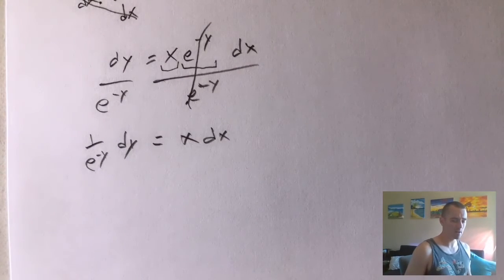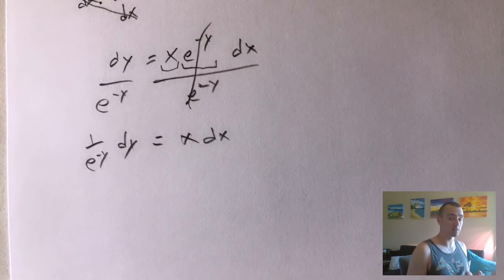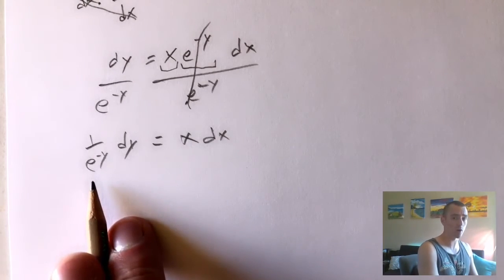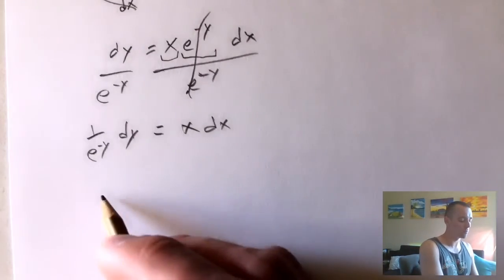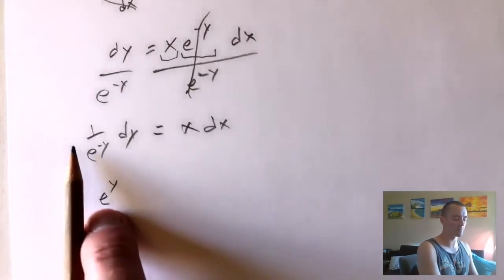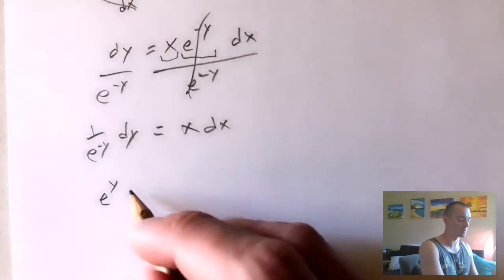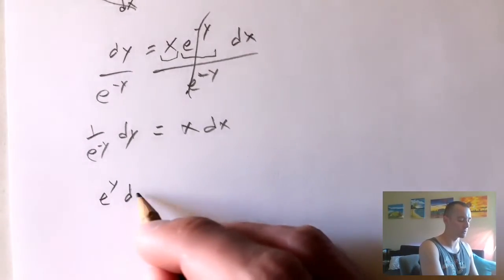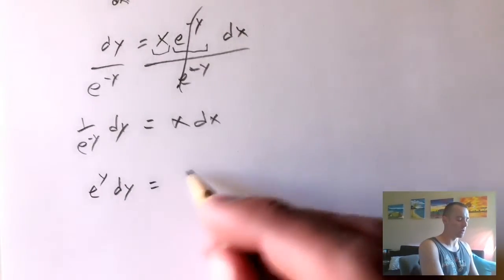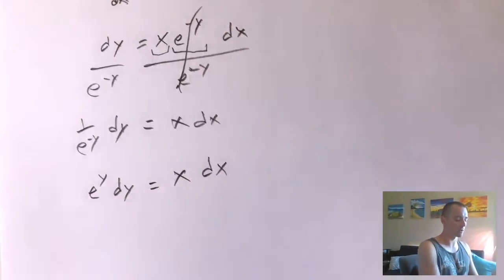On the left side we're going to have 1 over e to the negative y, times dy. Having a negative exponent in the denominator, you can make the exponent positive by flipping it over the fraction. So e to the y is the same as 1 over e to the negative y — those are equivalent. We still have our dy on the left side, and on the right side we still have x dx.